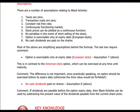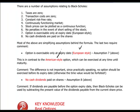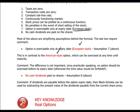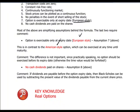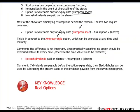The distinction between European-style and American-style options is also mentioned. An option exercisable only at expiry date is the definition of a European-style option. Next time, we're going to discuss the use of options as applied to real projects, so stay in this chapter and till next time.